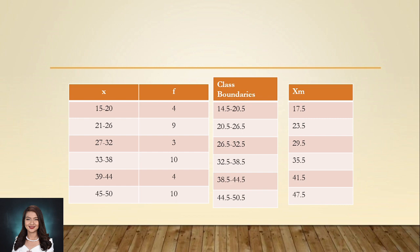The scores that we computed and expressed in a frequency distribution can be more meaningful and easier to interpret when they are graphed. There are methods of graphing frequency distribution: bar graph or histogram, frequency polygon, and smooth curve. Bar graph or histogram and frequency distribution will be discussed in the next video. See you, sweeties! Thank you for watching!